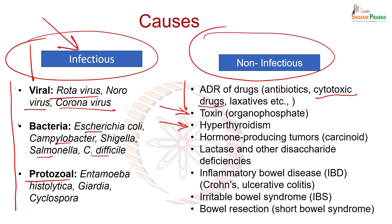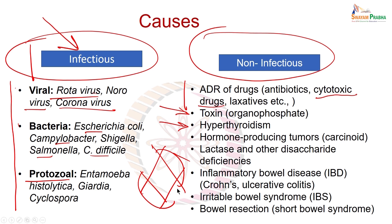Hormone-producing tumors, particularly carcinoid syndrome, commonly feature diarrhea. Lactose intolerance and inflammatory bowel disease, now considered a lifestyle and autoimmune disease, cause alternating diarrhea and constipation — sometimes called diarrhea-predominant IBS or constipation-predominant IBS. Short bowel syndrome, following bowel resection, also leads to diarrhea. In non-infectious diarrhea, giving an antimicrobial agent is useless and only overexposes the patient to medication where it is not required.